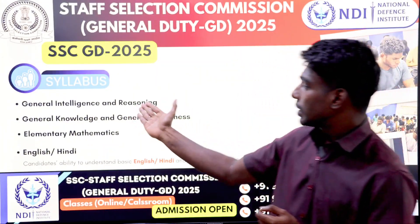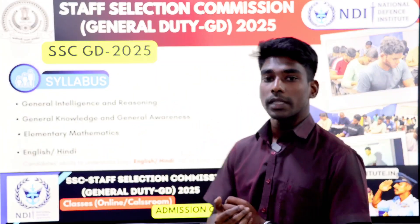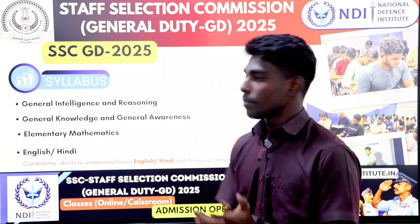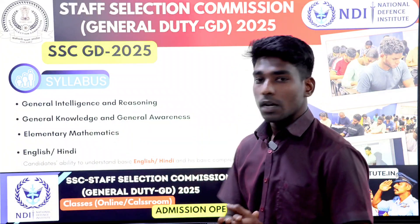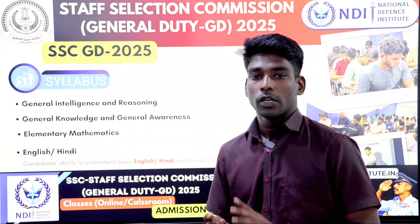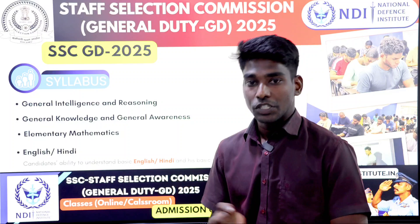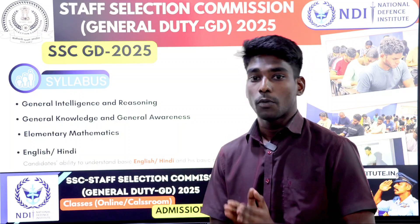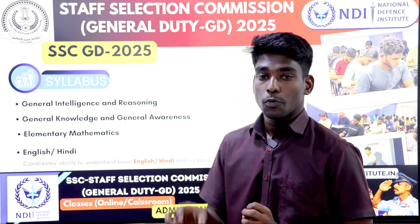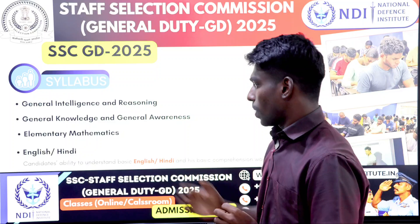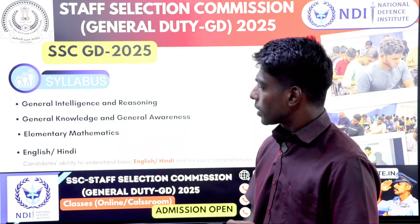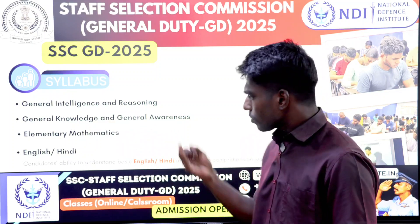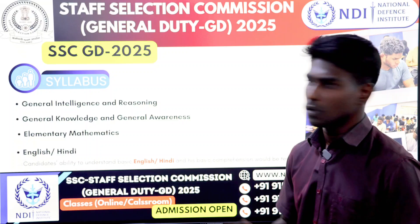Regarding the syllabus: for Intelligence, you will cover non-verbal and verbal reasoning. For GK, the topics include polity, geography, and history at a basic level. In Mathematics, topics include ratio and proportion, percentage, and train-related sums.